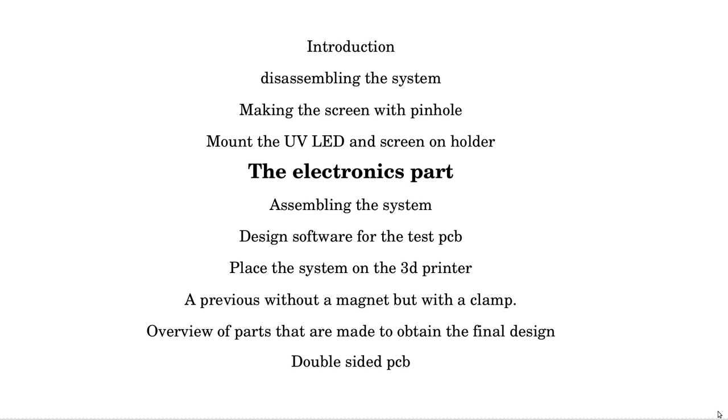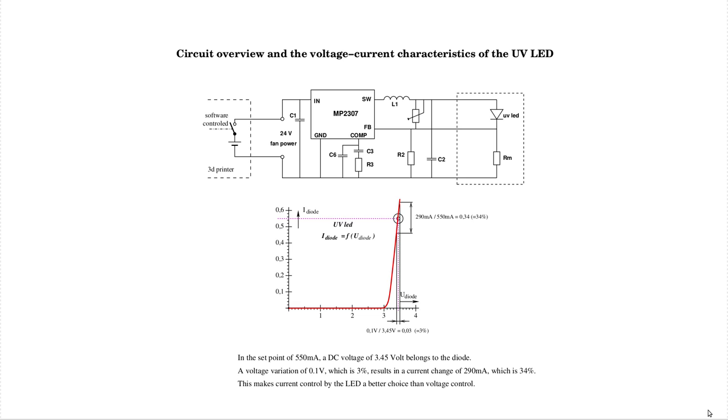The electronics for controlling the LED are provided by a buck converter. The input of the buck converter will be controlled by the fan voltage that can be switched on and off via the software. The LED has such a voltage current characteristic that the current can increase sharply with a small voltage variation. It is therefore better to send a fixed current through the LED. The current is determined by the voltage on Fb and the resistance value of Rm.